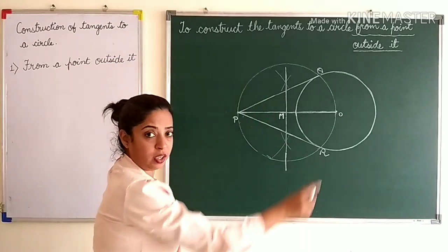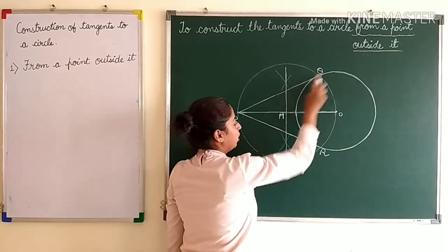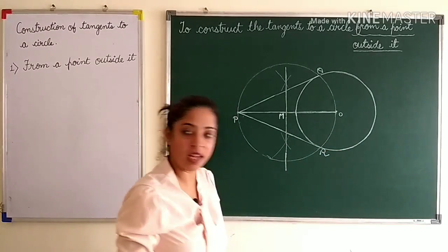Now we will draw it once more and then I will explain the reason why PQ and PR are the tangents to this circle. So let's draw it once again.